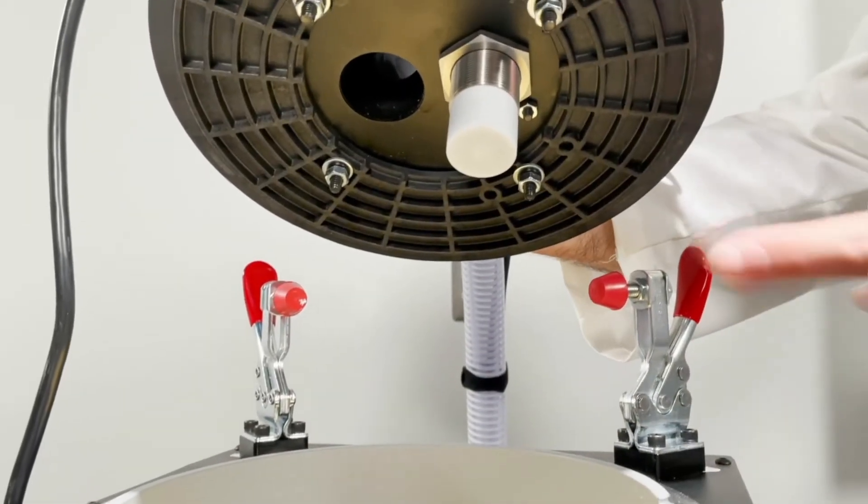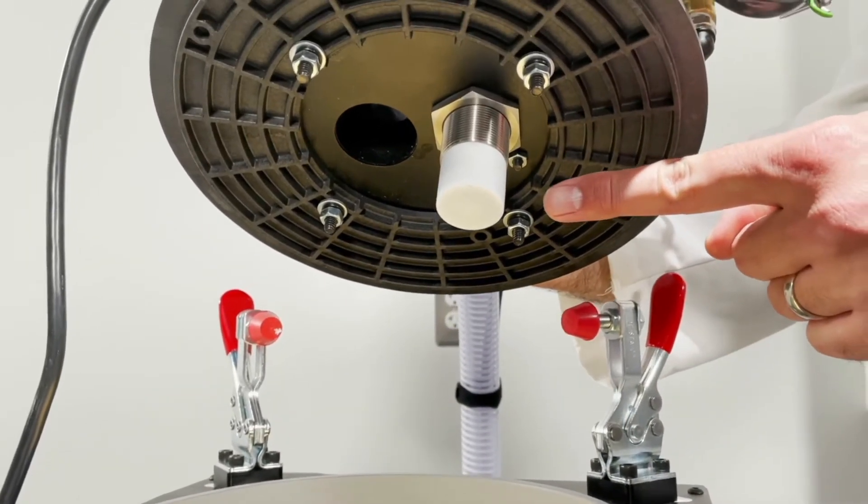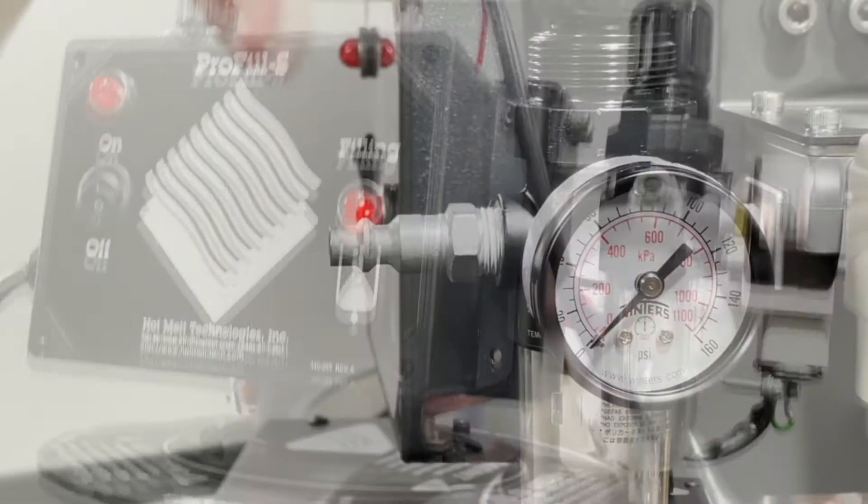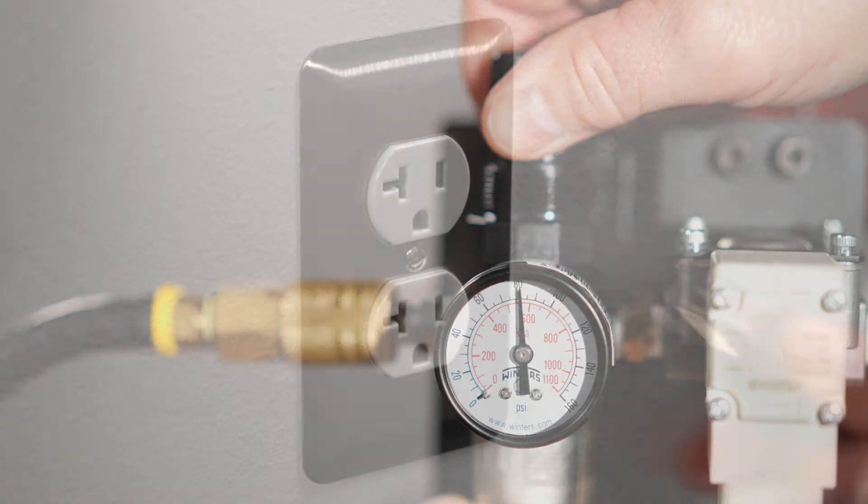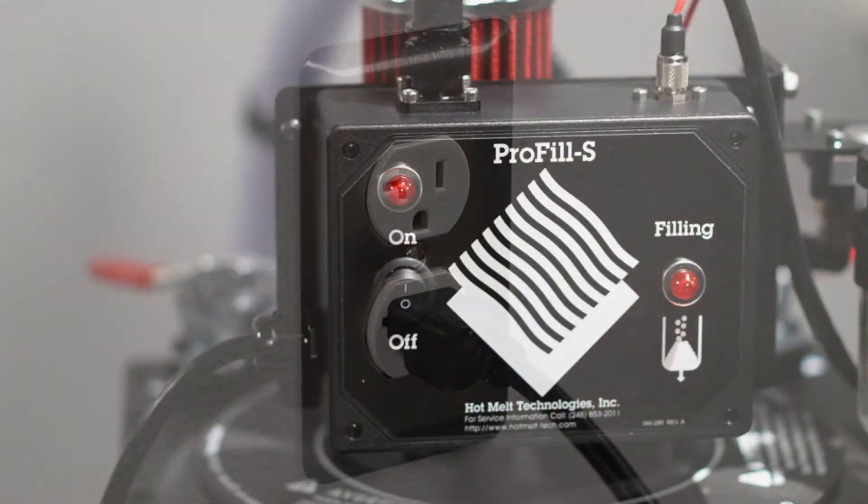The unit uses a sensor and is mounted on a melt tank lid that is securely fitted to your HMT system. Connect dry plant air to the regulator and adjust to 80 PSI. Plug it in and turn it on.